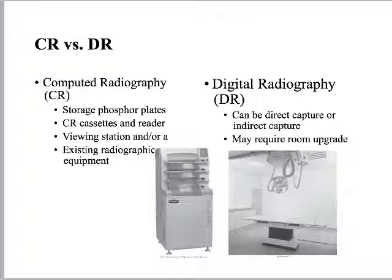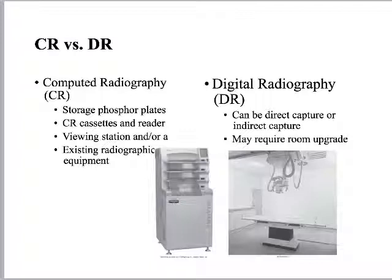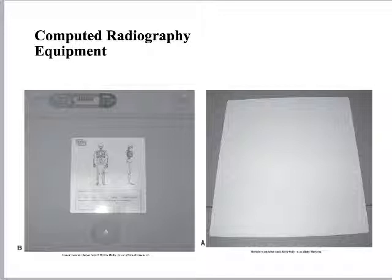CR versus DR — we're pretty familiar with the distinctions because they create major differences in everyday x-ray department workflow. CR uses storage phosphor plates inside CR cassettes, a CR reading station, and a viewing station before sending images to PACS. DR may require a room upgrade, and a lot of times you take the picture and it just pops up on your computer screen with no additional reading required.